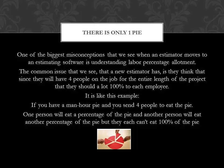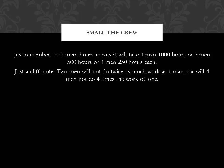One of the biggest misconceptions when an estimator moves to estimating software is understanding labour percentage allotment. A common issue is that new estimators think that since they will have four people on the job for the entire length of the project, they should allot 100% to each employee. Think of it like a man hour pie: if you send four people to eat that pie, each person eats a percentage of the same pie — they can't each eat 100% of it. Remember: 1,000 man hours means it will take one man 1,000 hours, or two men 500 hours, or four men 250 hours each. And a cliff note: two men will not do twice as much work as one man, nor will four men do four times the work of one man.